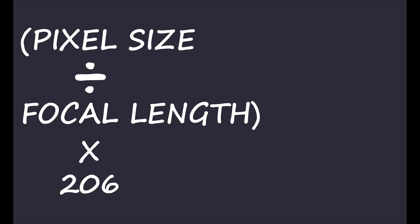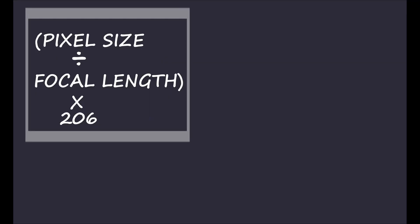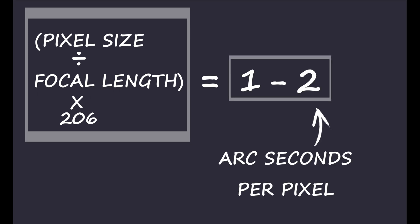The number 206 comes from the fact that there are 206 arc seconds per radian — it's a whole other equation, but to keep it simple: pixel size divided by focal length, times 206. We want that number to fall between one and two, and that's your arc seconds per pixel. This helps you get a sharp image of your stars.